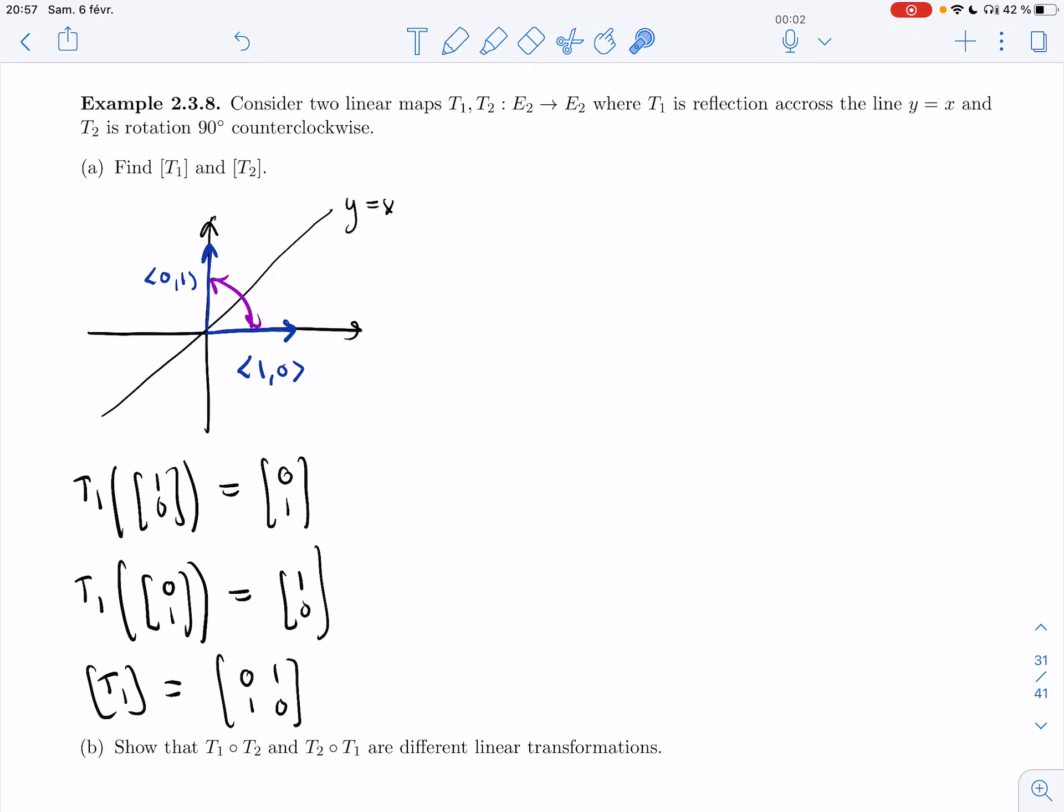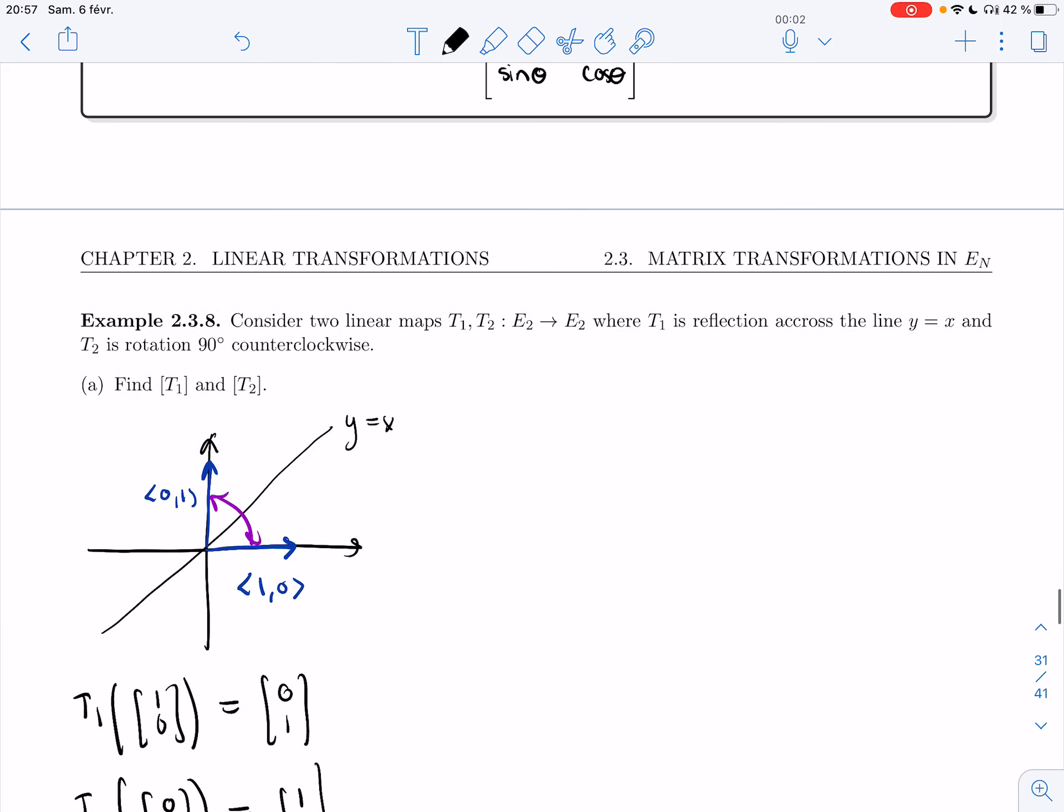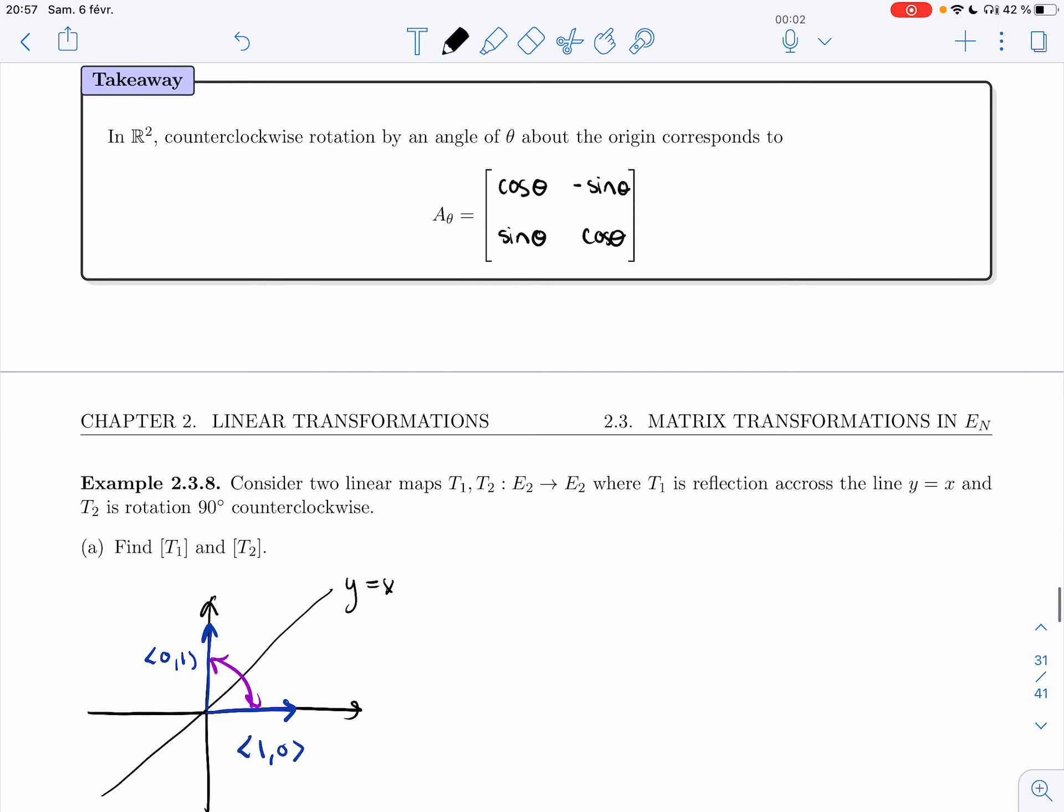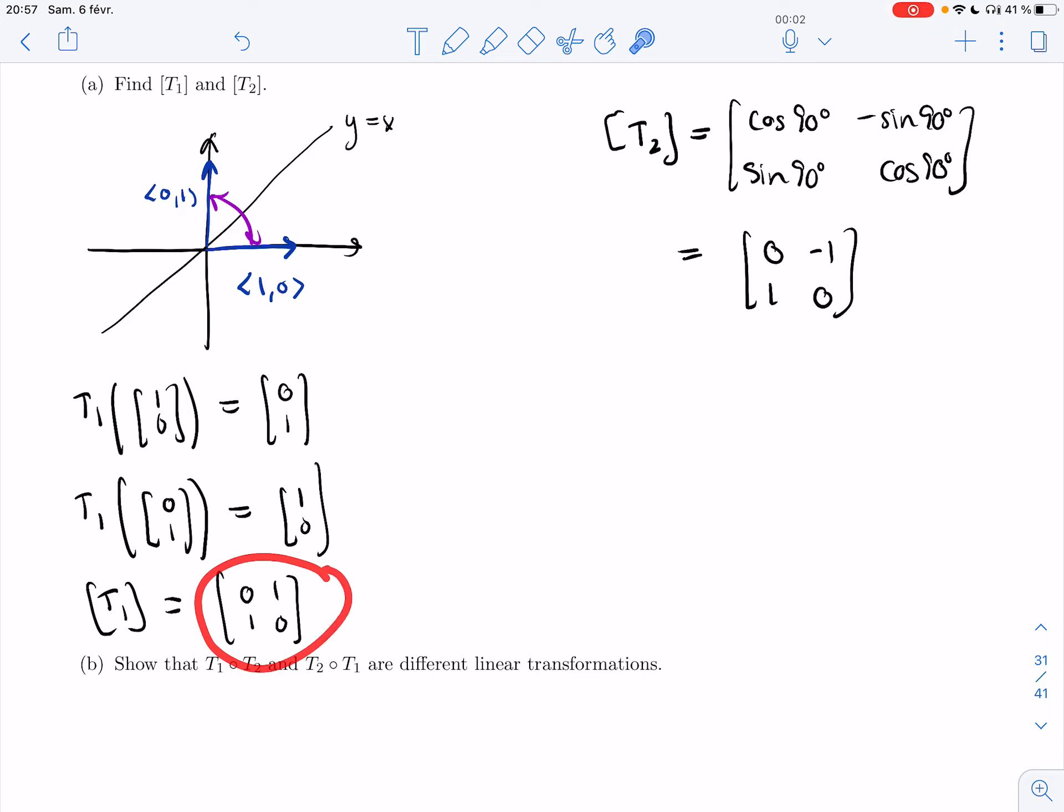T2 is rotation 90 degrees counterclockwise. In the last video, we saw a formula for all of them, so might as well use that. Why work on the same problem 20 times once you understand it? So it's cosine 90, minus sine 90, sine 90, cosine 90 degrees. Cosine of 90 degrees is 0, so we get the matrix [0, -1; 1, 0]. Now we have our two matrices and we're ready to study the composition.